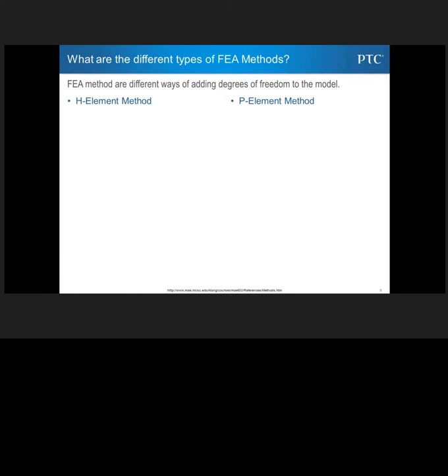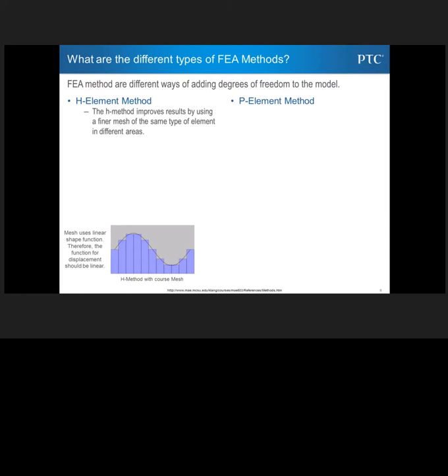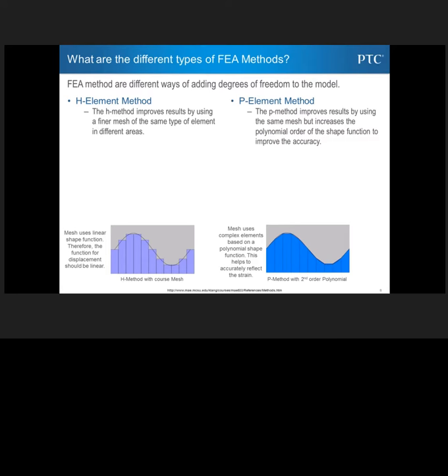So if we just compare the two types of FEA methods out there, we have the H method over on the left, which improves the results by using a finer mesh of the same type of element in different areas. Where the P-element method improves results by using the same mesh, so it does not remesh it, but increases the polynomial order or the shape function, which means also it adds more math to the model. That's what it's really doing.